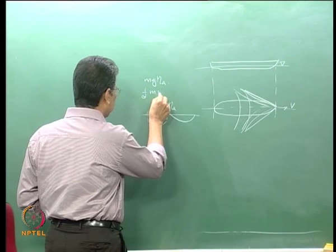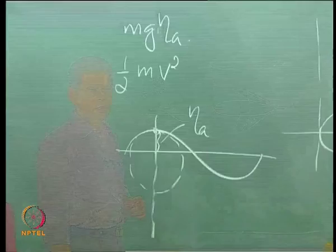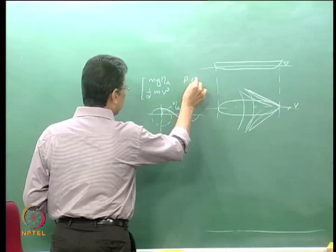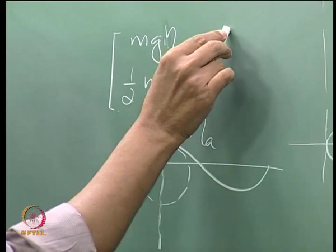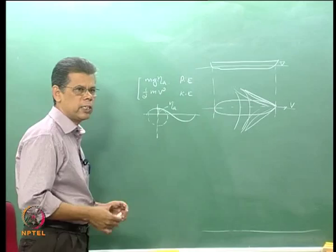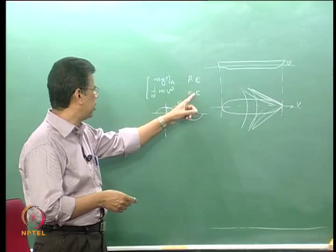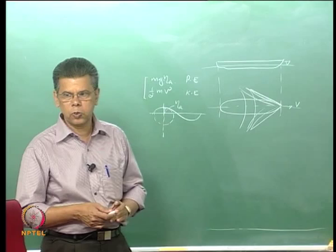In a wave, the water particle orbit is usually circular in deep water condition and the particle oscillates about its mean position. The water particle, which possesses mass and is subject to motion, has a kinetic energy given by half m v squared, where v is the tangential velocity of the particle in its orbit. So the wave possesses two types of energy: potential energy and kinetic energy. The law of conservation of energy applies: the ship generates waves, and this energy must come from the ship — that is how energy relations are applied to wave making resistance.